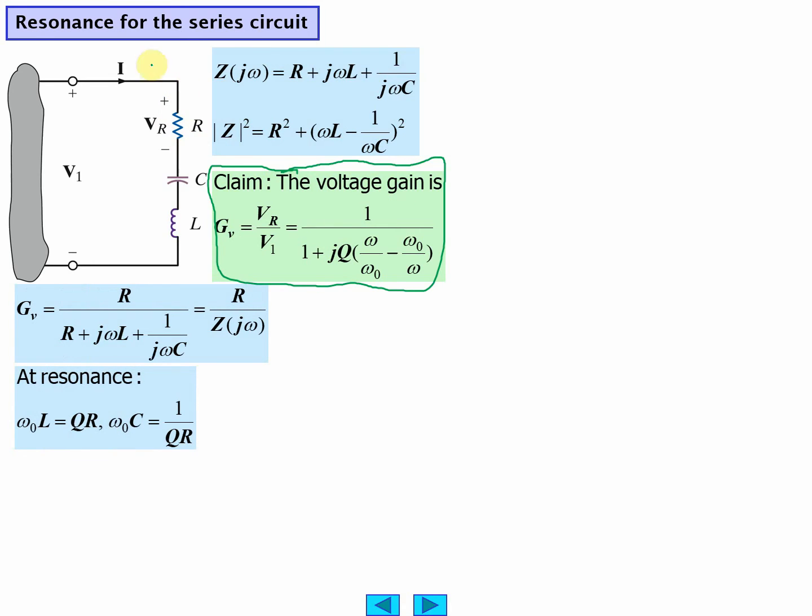At resonance, this is true. Omega naught is equal to one over the square root of LC.